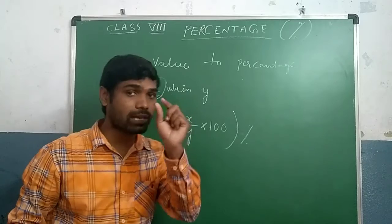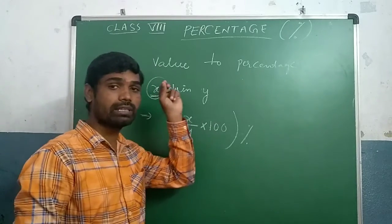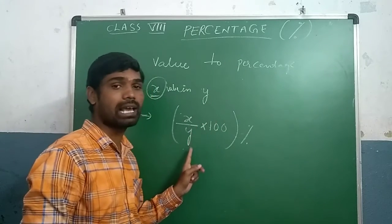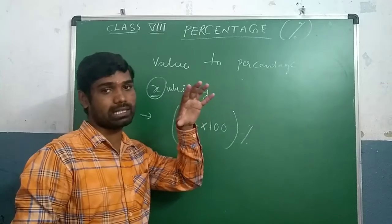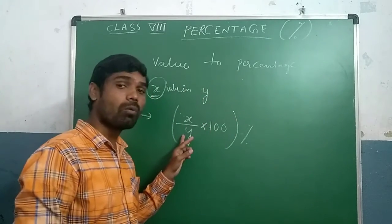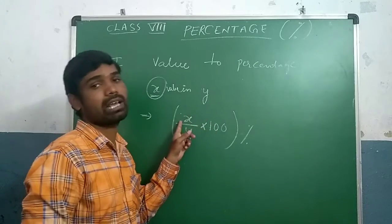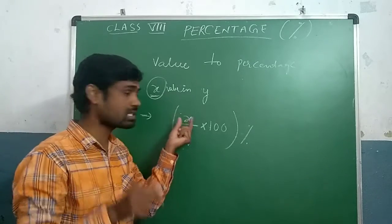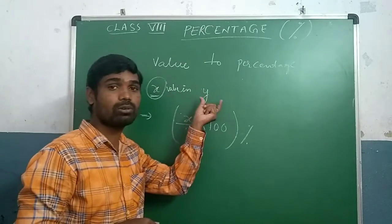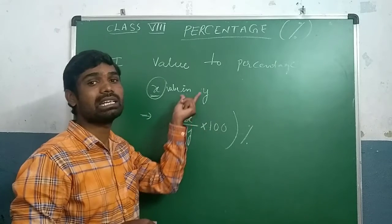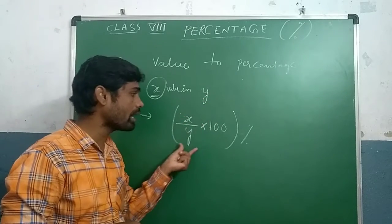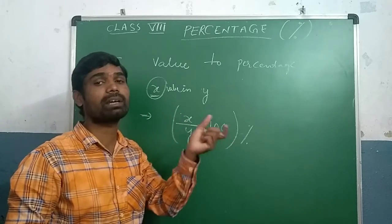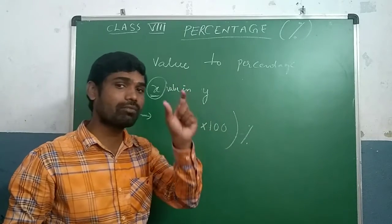Which value are we finding? X value. So we need the percentage of x in y. 'In' is written as the denominator — that is y. Which value's percentage? X value percentage in y value. Therefore, x percentage in y equals x by y into hundred. Why multiply by hundred? Because percentage means for every hundred — we calculate for every hundred.